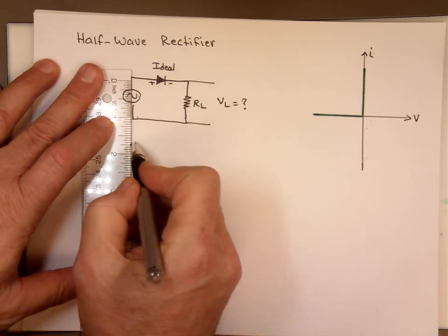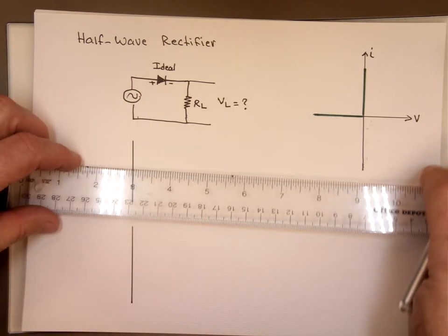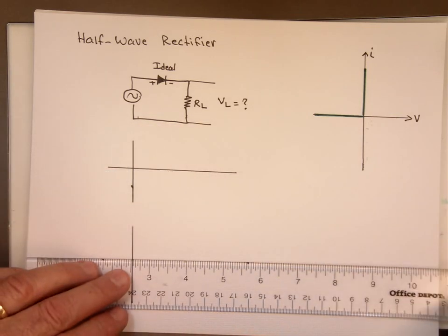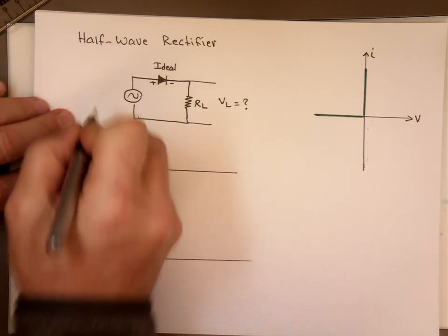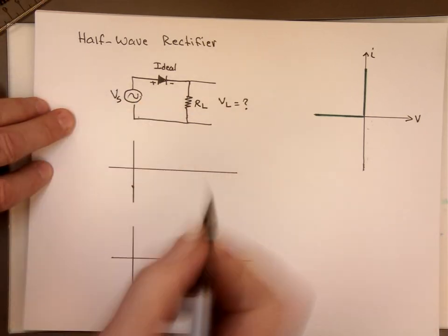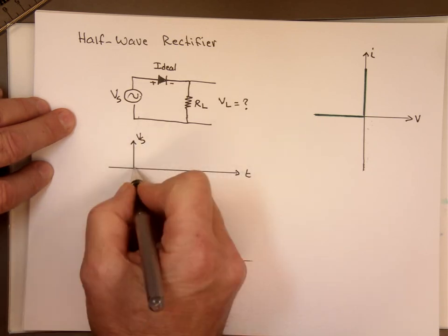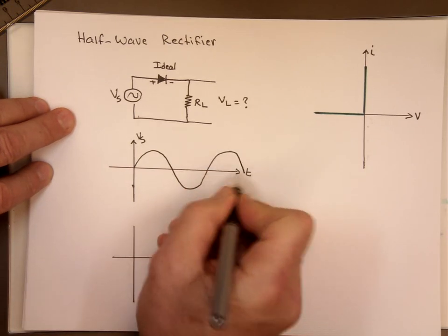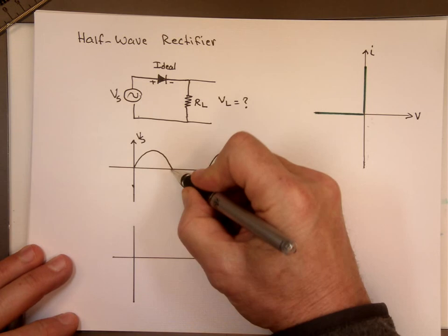So if I put these, I'm going to do two lines here and show you both at the same time. So if the source voltage were called Vs here, so this is Vs versus time, it's a sine wave.